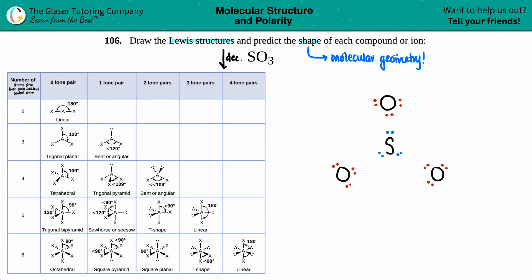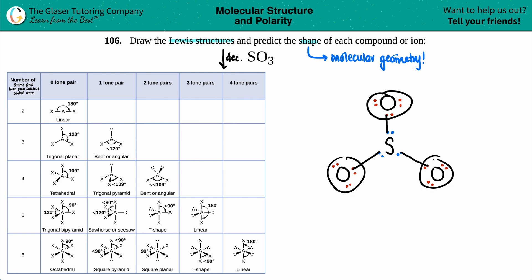Bind them up with single bonds first, then double them up if you need more bonds. Dot to dot gives single bonds — connecting sulfur to each of the three oxygens with single bonds.